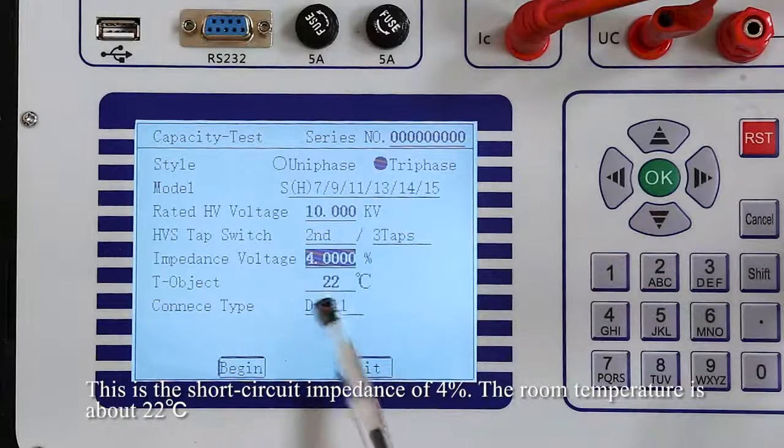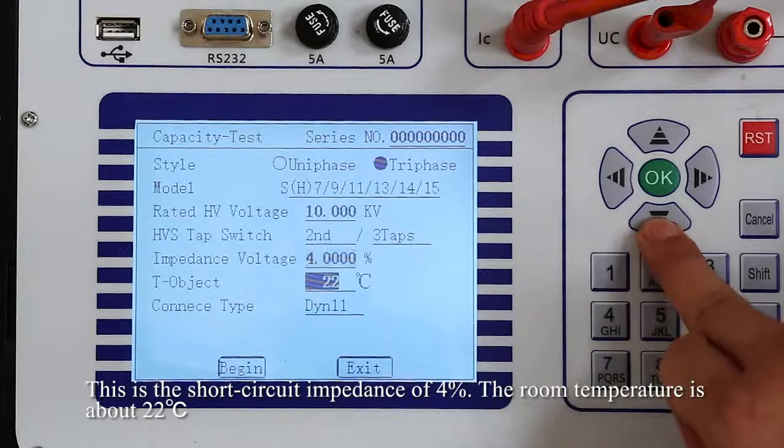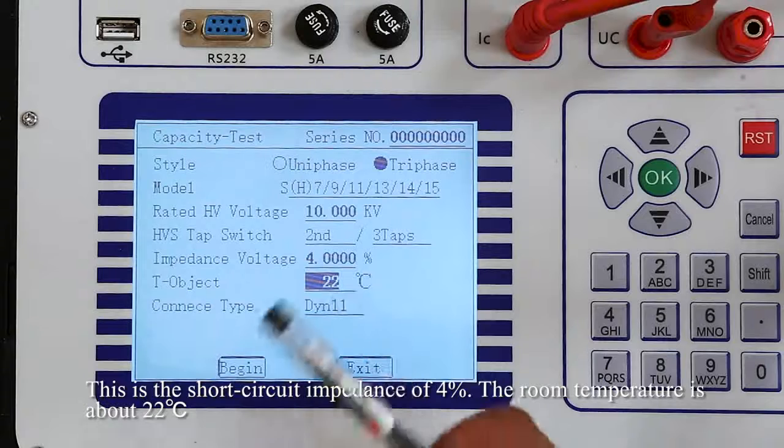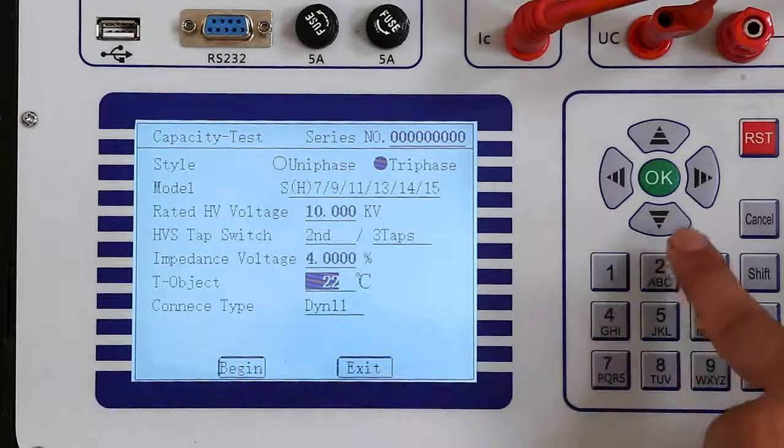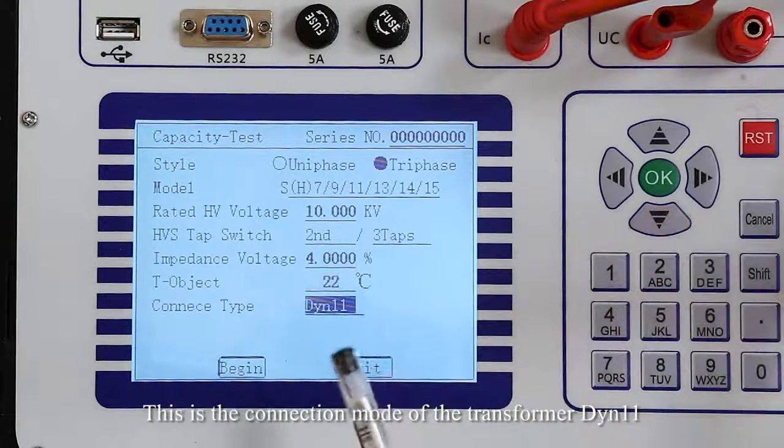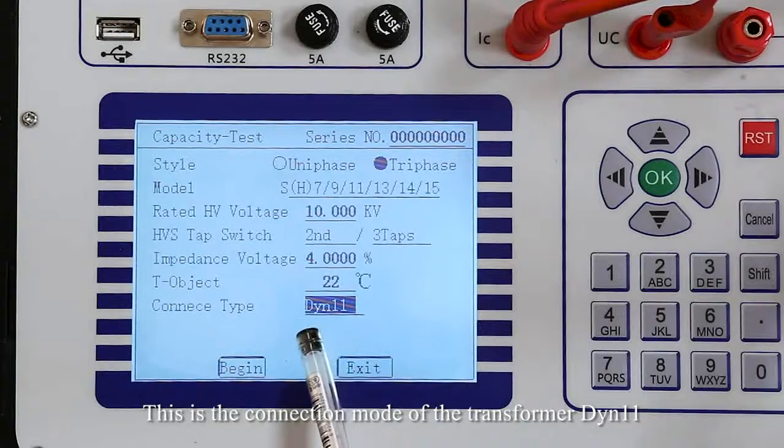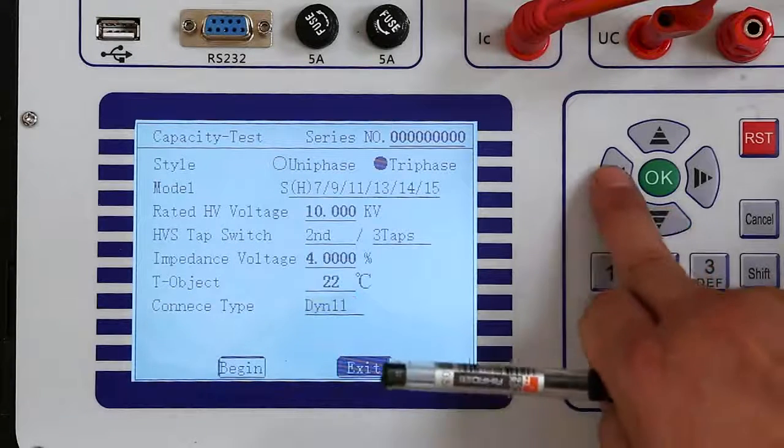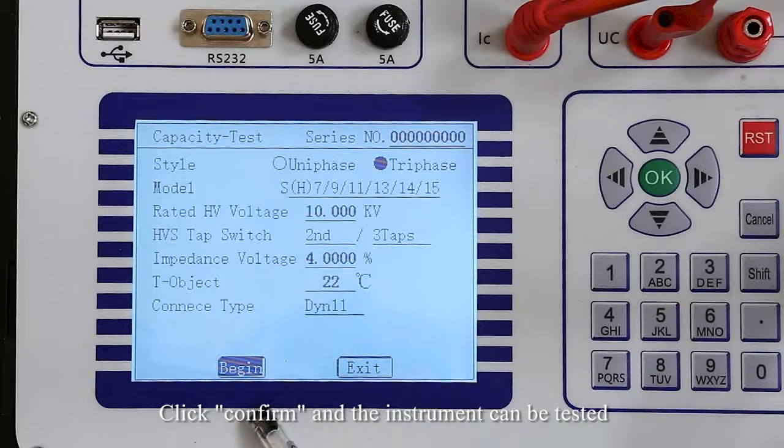This is the short-circuit impedance of 4%. The ambient temperature is about 22 degrees Celsius. This is the connection mode of transformer DYn11. Click confirm and the instrument can start testing.